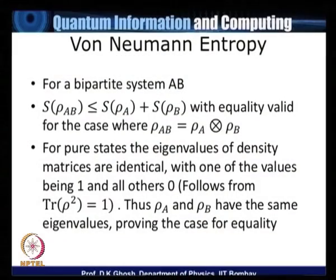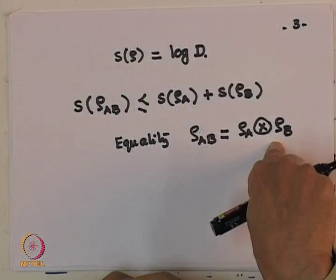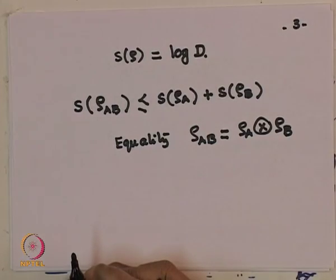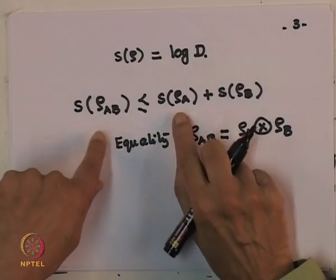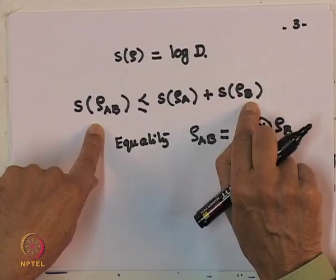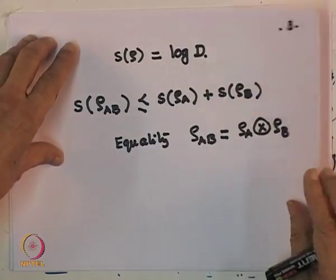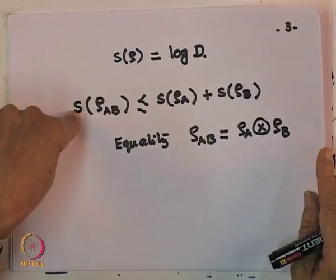We know that for pure states the eigenvalues of the density matrices are identical with one of the values being equal to 1 and all others equal to 0. ρA and ρB must have their S equal to 0. This is the standard mixing theorem: when you mix the system SA and SB, the S of ρAB becomes less than or equal to SA plus SB. Let me give you a few examples.